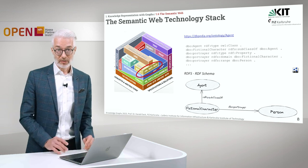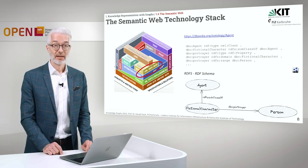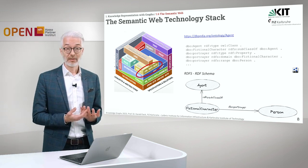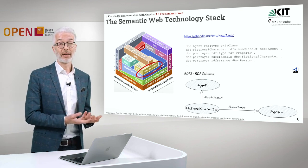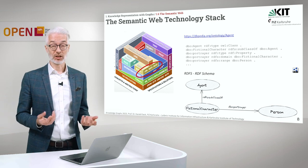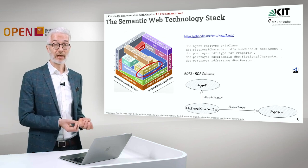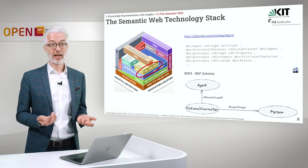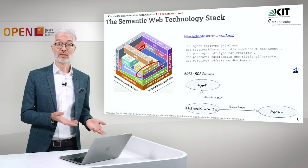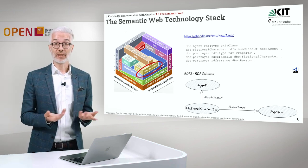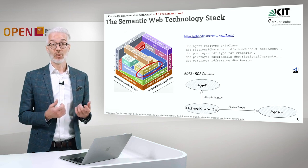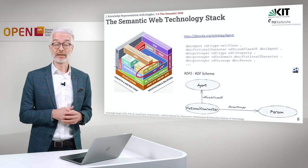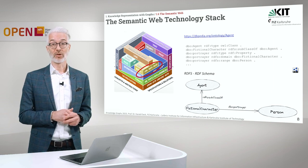On the next level of the Semantic Web Technology Stack, we need the ability to form models and structures out of the classes we have and out of the relations. We must define classes, we must define relations between classes. This we can do with languages like OWL — the Web Ontology Language — RDFS, which is RDF Schema, or SKOS, which is a dialect for interrelating classes and relations with each other.